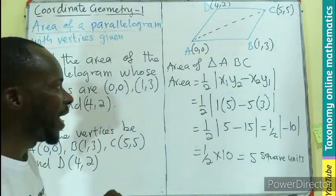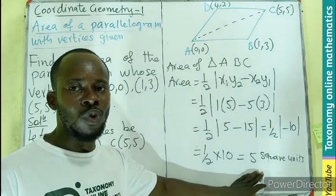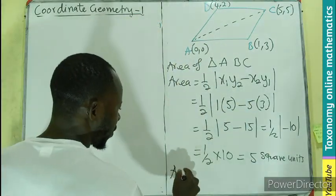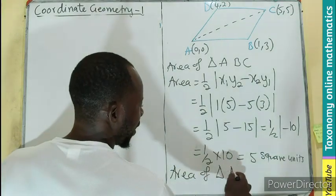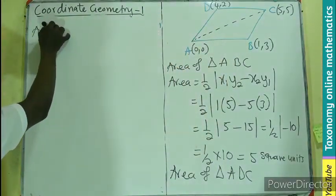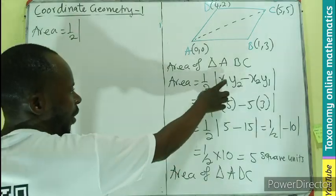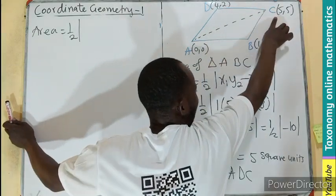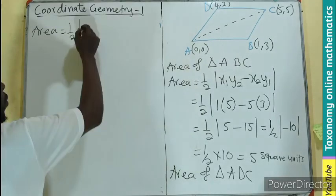The area of the first triangle here will be 5 square units. Let's find the area of the second triangle, ADC. The area will just be half the absolute value—we already know the formula. In this case, x1, y1, x2, y2.